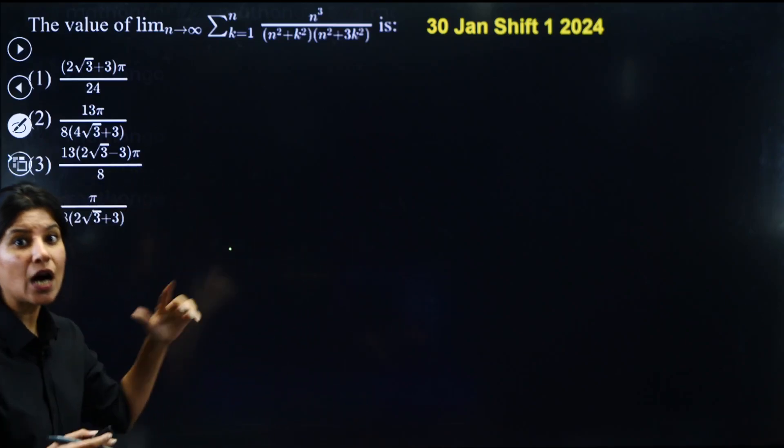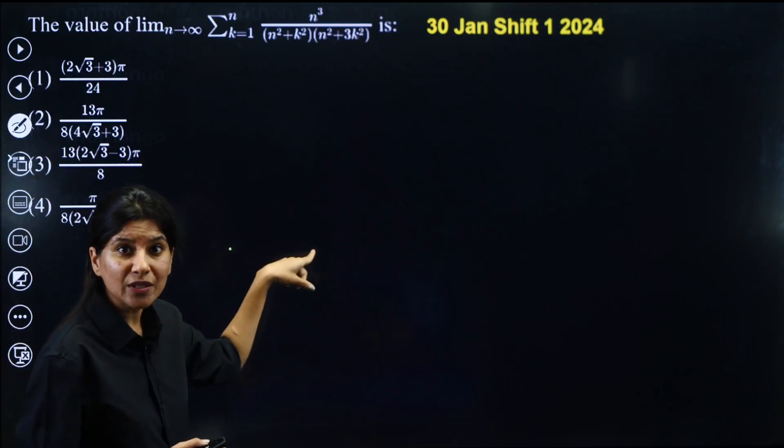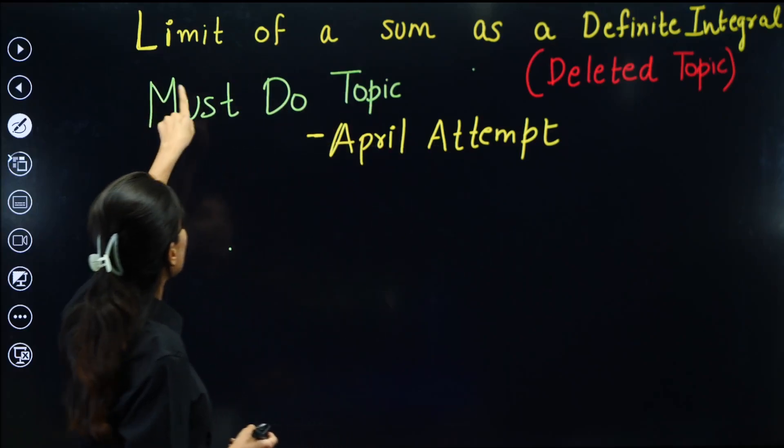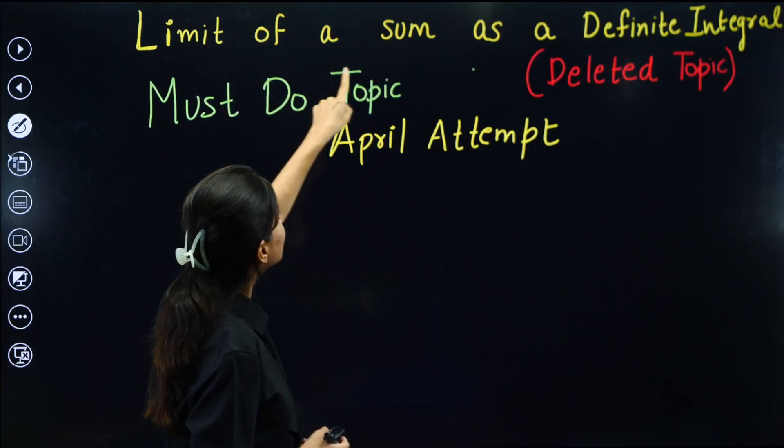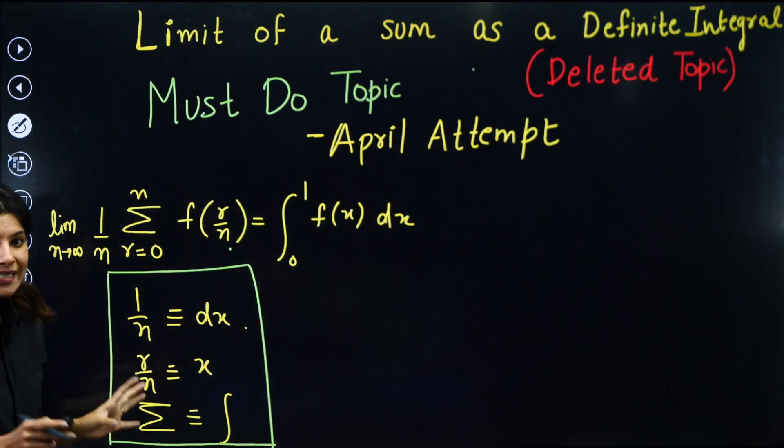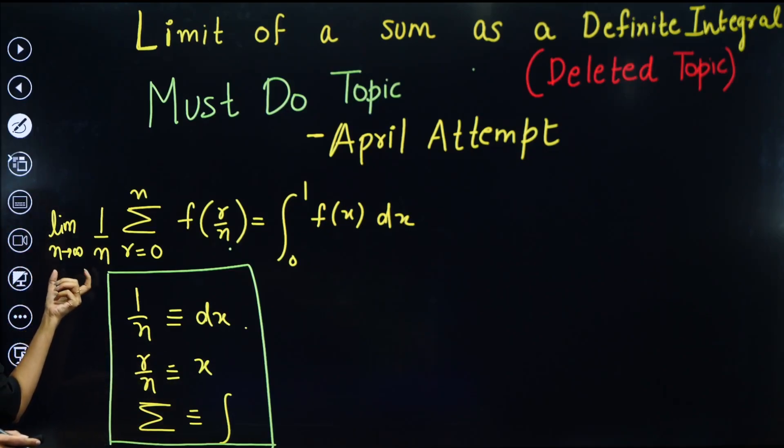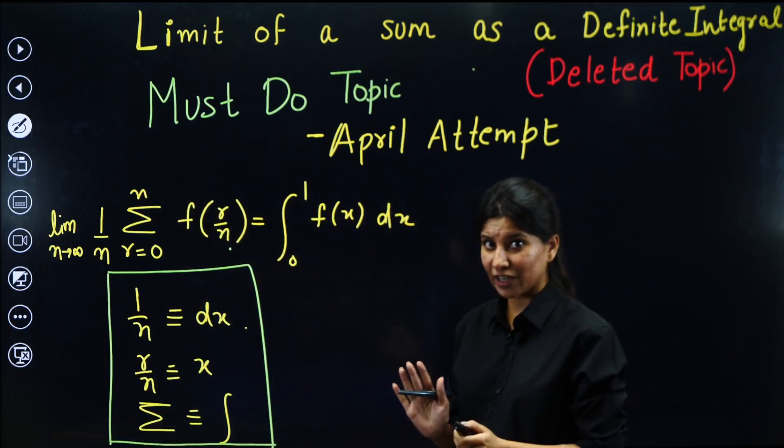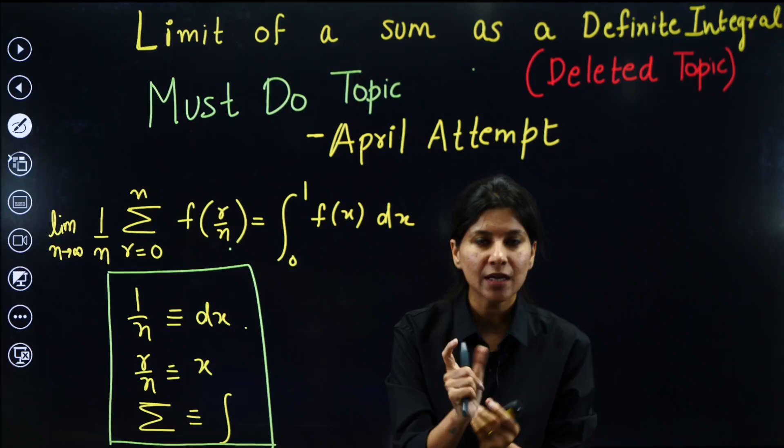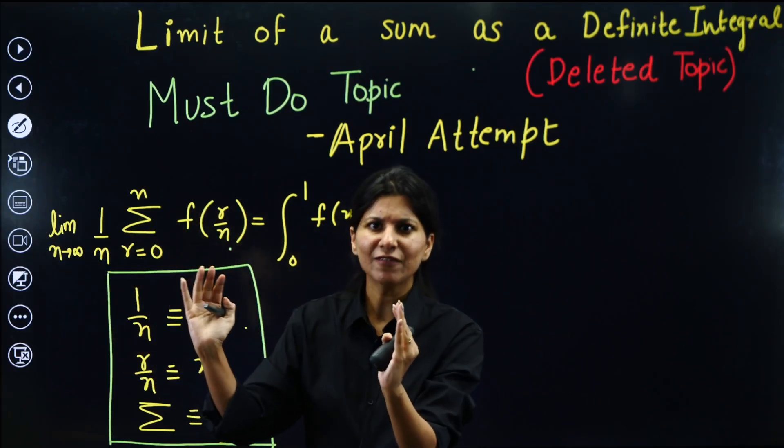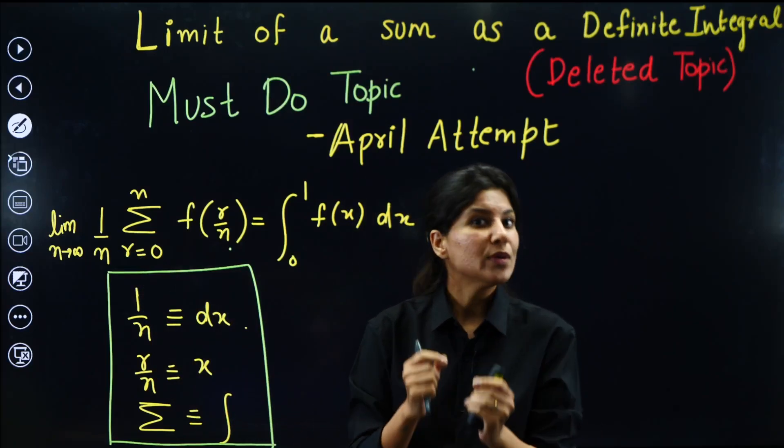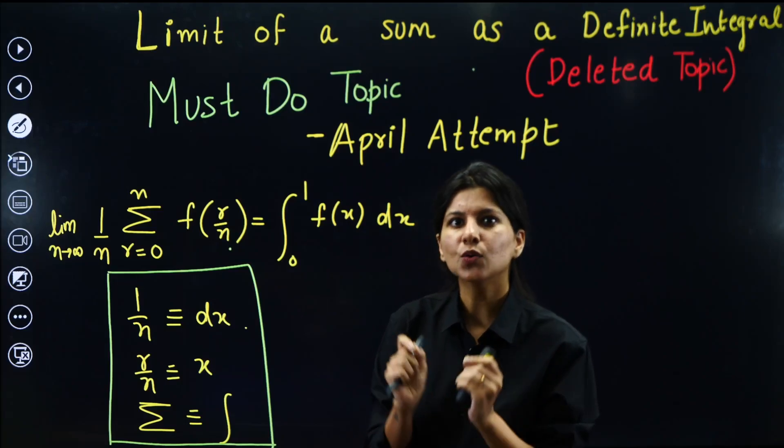Let us understand how to decode, how to identify, how to realize that this is not a proper limit question but from the topic limit of a sum as definite integration. Please mind that the topic itself is saying limit of a sum expressed as definite integration. Let us understand what is the format. So you will see in such question, first of all, you will see limit over here where N will tend towards infinity. That's the first identification.